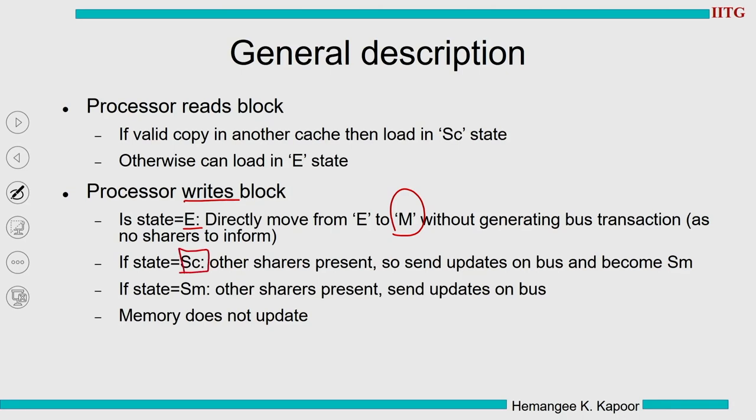When in SC and a processor write occurs: SC means others are also reading this data block, and since this is an update-based protocol, we simply start writing to the block and send updates onto the bus. Any words changed in the block are transmitted on the bus so other caches will modify themselves. Because this cache sent the updates, it takes ownership and moves to state SM.